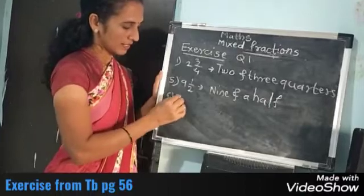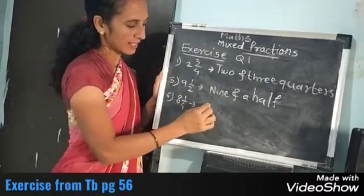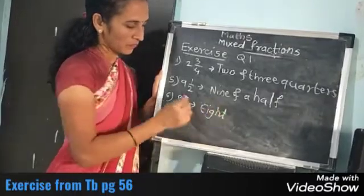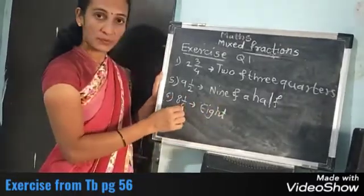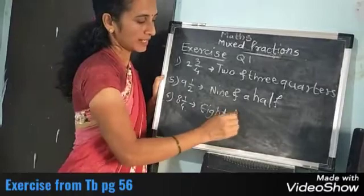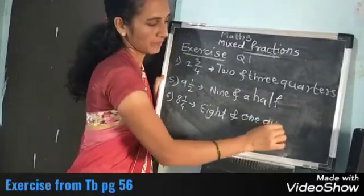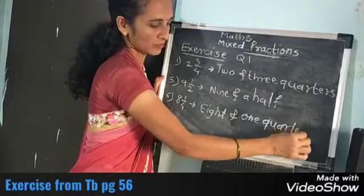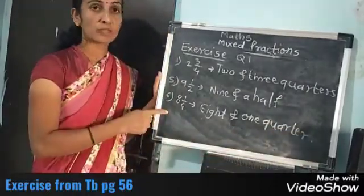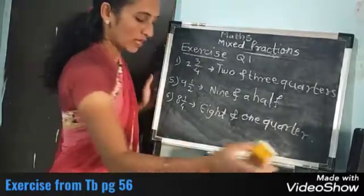8 and 1 upon 4 means 1 quarter, so it is 8 and 1 quarter. You can say 'a quarter' also — no problem. In this way, you have to complete question number 1 in your notebook.